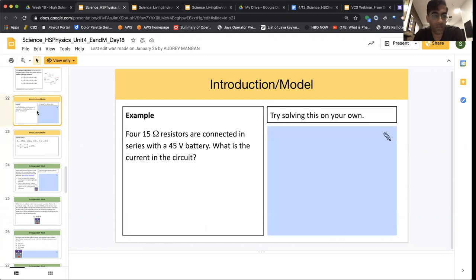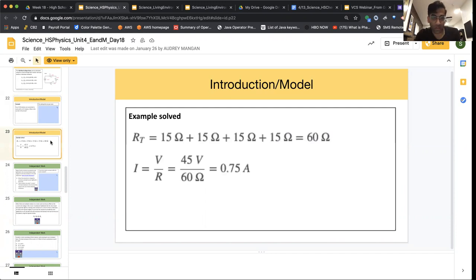We have four 15 ohm resistors that are connected in a series with a 45 volt battery. So they worked it out in the next slide, and I'm just going to walk you through it. If we have four 15 ohm resistors, that means we add 15 four times and we get 60 ohms. And that is our total resistance.